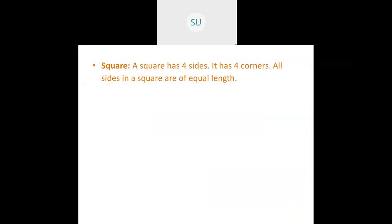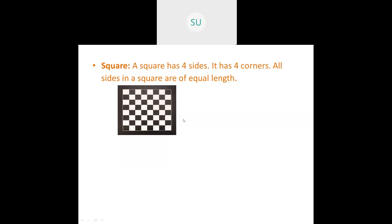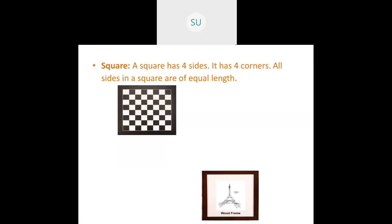A square has four sides and all the sides are of the same length — they are equal. It also has four corners. Examples of squares: a chessboard is square in shape, and a wooden photo frame is also square in shape.